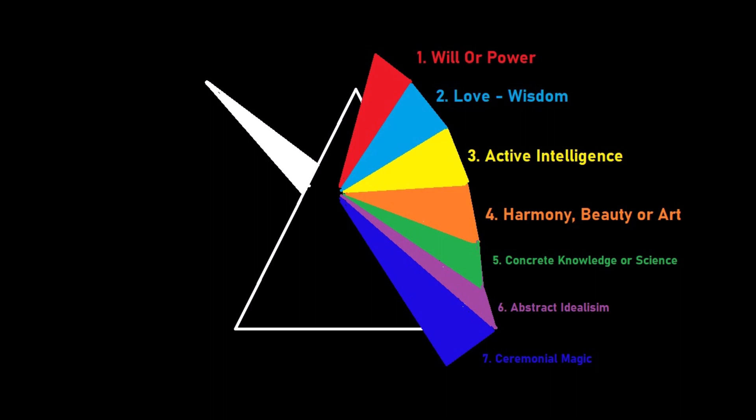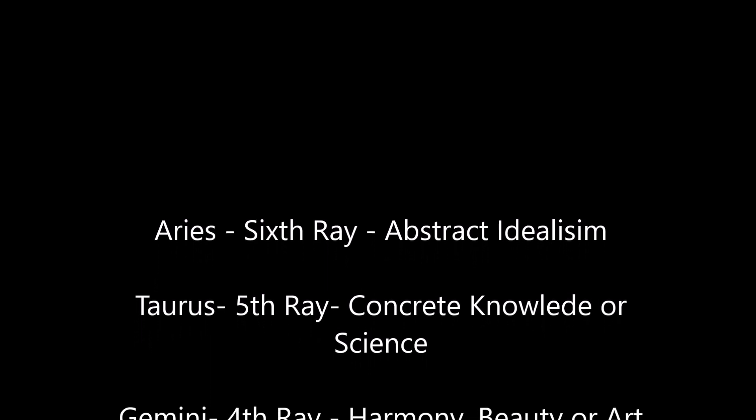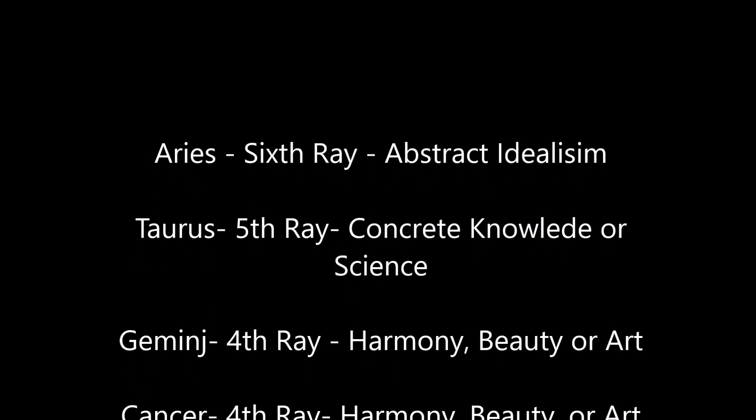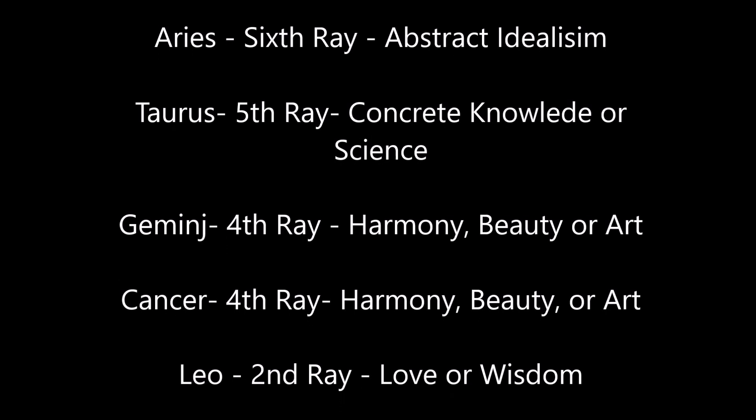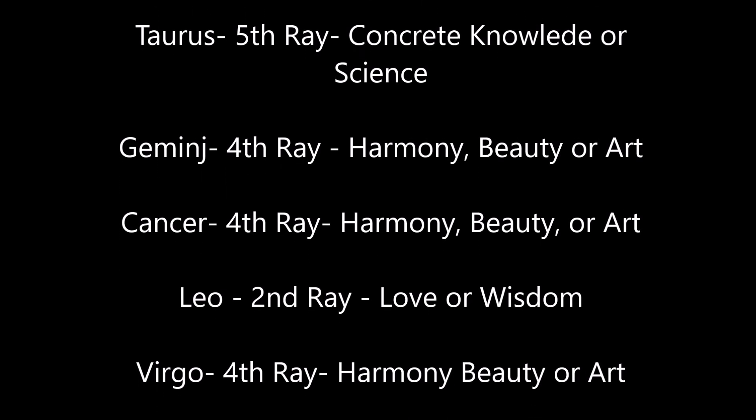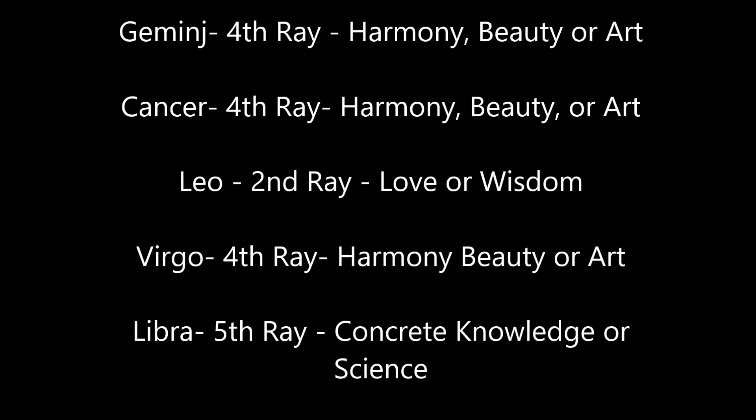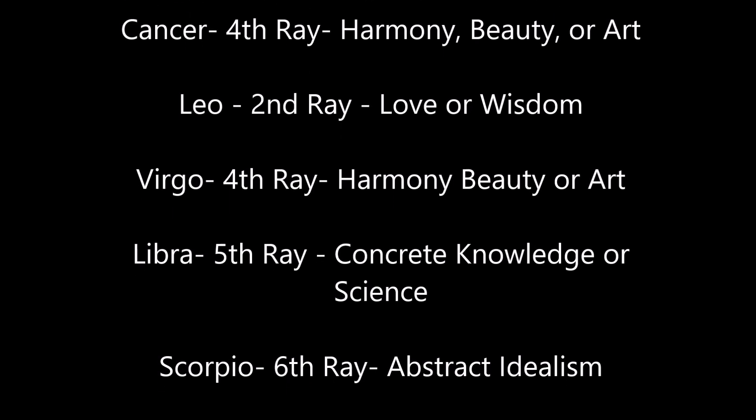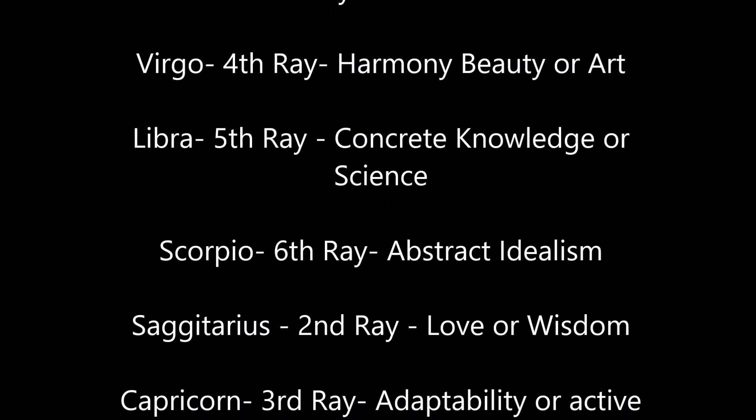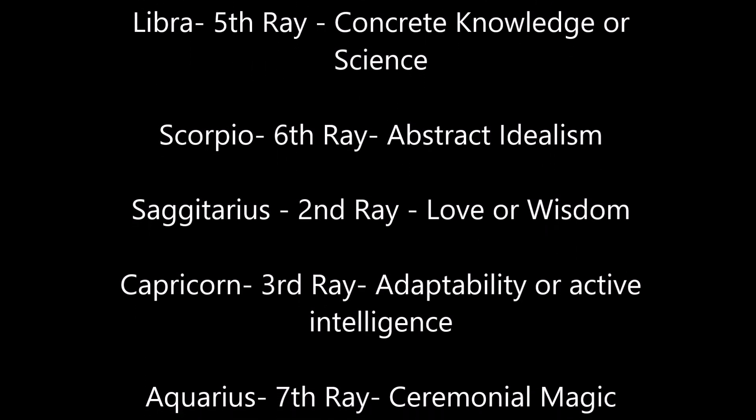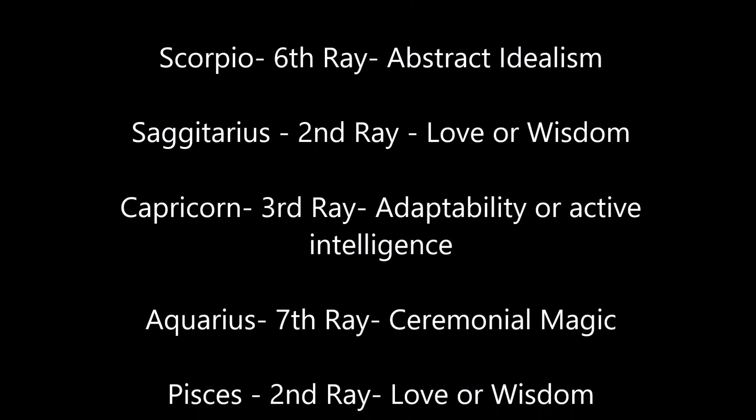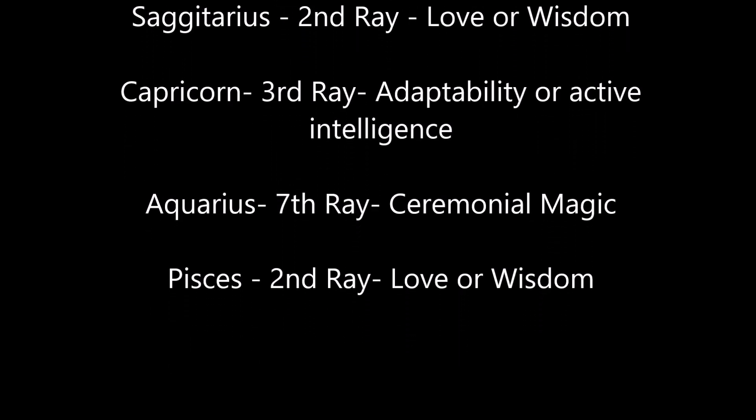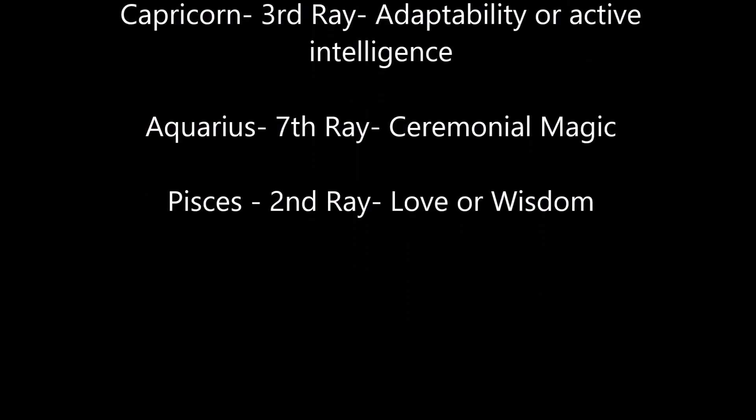Here are the rays of the zodiac signs: Aries, sixth ray, abstract idealism; Taurus, fifth ray, concrete knowledge or science; Gemini, fourth ray, harmony, beauty, or art; Cancer, fourth ray, harmony, beauty, or art; Leo, second ray, love or wisdom; Virgo, fourth ray, harmony, beauty, or art; Libra, fifth ray, concrete knowledge or science; Scorpio, sixth ray, abstract idealism; Sagittarius, second ray, love or wisdom; Capricorn, third ray, adaptability or active intelligence; Aquarius, seventh ray, ceremonial magic; Pisces, second ray, love or wisdom.